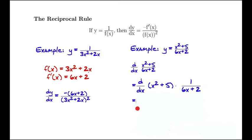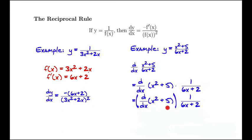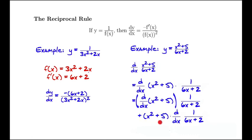So this is going to be equal to, based on the product rule, the derivative of the first expression (x squared plus 5) — with parentheses to indicate we're taking the derivative of x squared plus 5 — times the second function, 1 over 6x plus 2. Then the product rule continues: plus we leave the first function alone, (x squared plus 5), times the derivative of the second function, 1 over 6x plus 2.